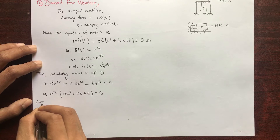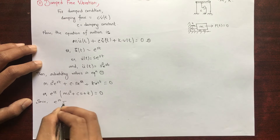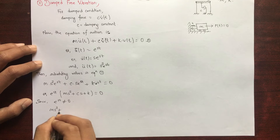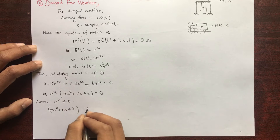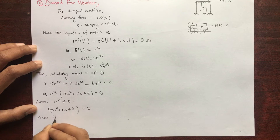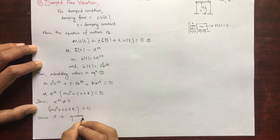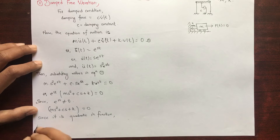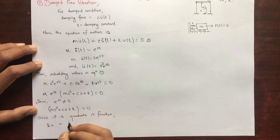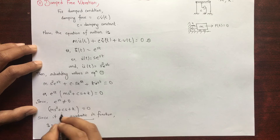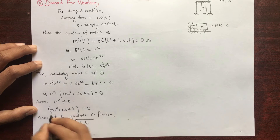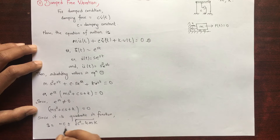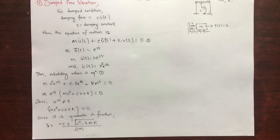Since the exponential term e^(st) cannot equal zero, we have ms² + cs + k = 0, which is quadratic in nature. For its solution we apply the quadratic formula from basic algebra: s = (−c ± √(c² − 4mk)) / (2m). Here a = m, b = c, and the constant term is k.